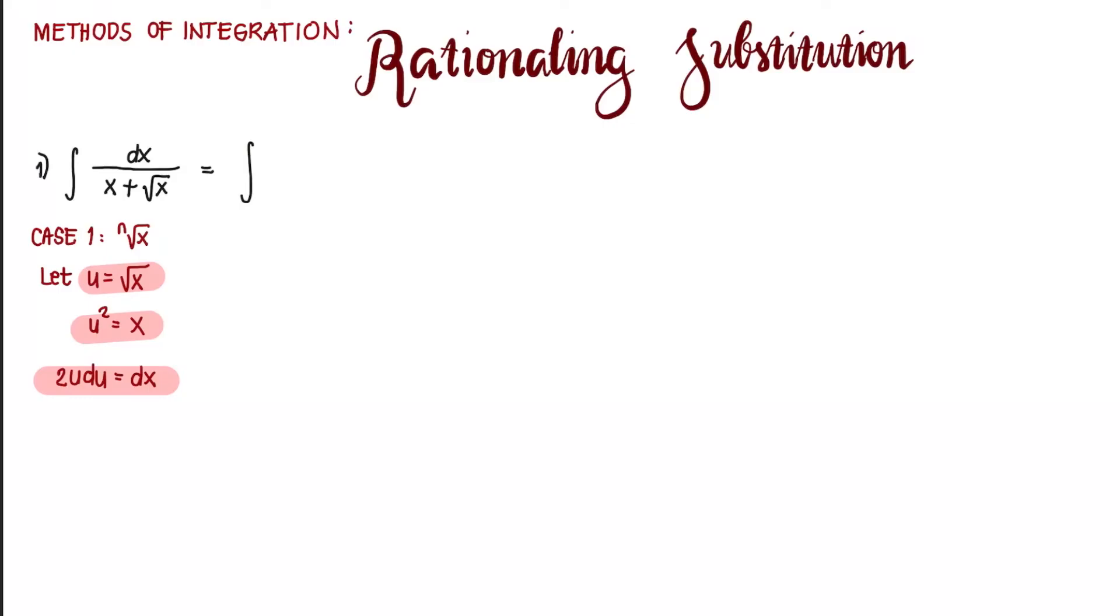So dx equals 2u du divided by x is u squared and then square root of x is u. We put the constant 2 outside. We have u du in the numerator. And then for the denominator, we can factor out u, leaving us u plus 1.